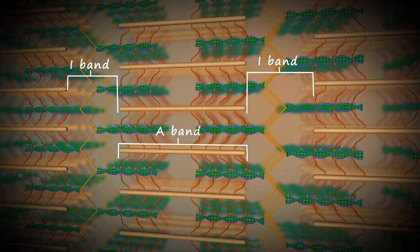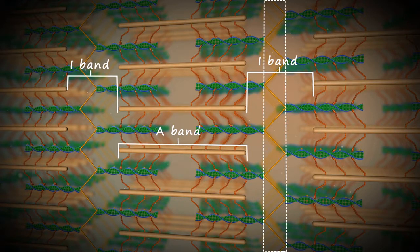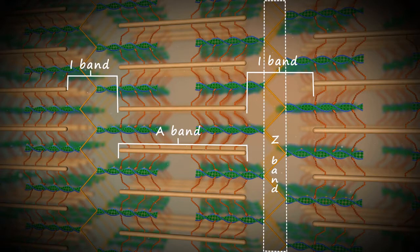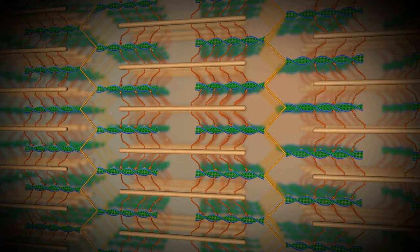This is a typical sarcomere unit: I band, A band, I band. Coming back to the I band, it also has one center. That center is called the Z band, named after the scientist who first observed it. So from one Z band to another Z band is your complete sarcomere. As you can see, the filaments move over each other and form bridges, and these bridges bring about different kinds of movements.